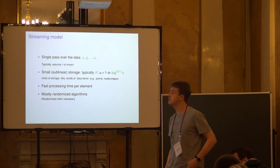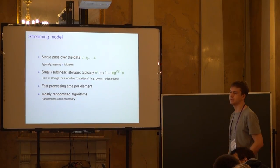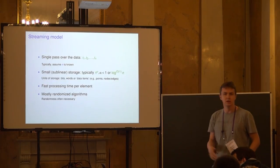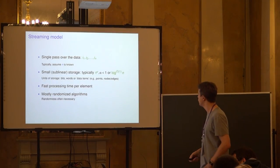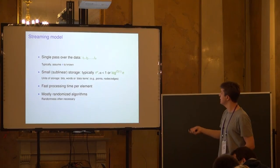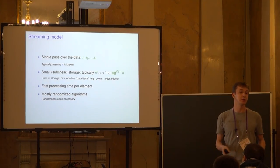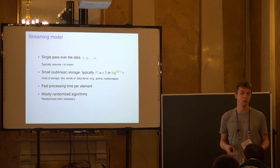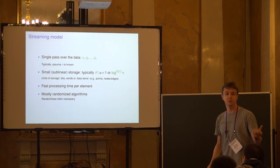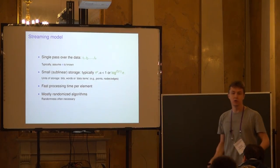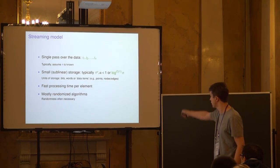If the stream length is unknown, you can use a doubling trick: wait until you think n is 10, use an algorithm assuming n is 10, and once you see more than five elements, double your estimate. Storage is measured in bits, or equivalently in words of size log n, or in data items. Up to poly-log factors these are all the same.